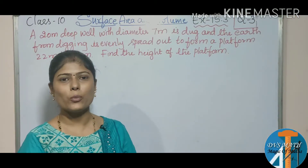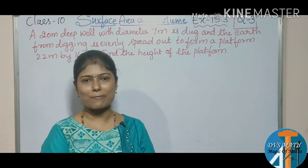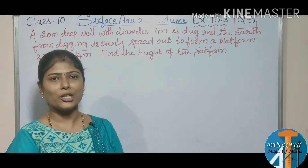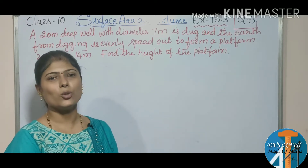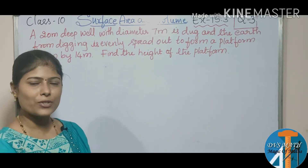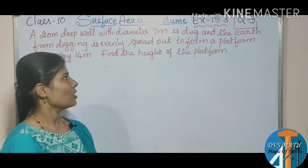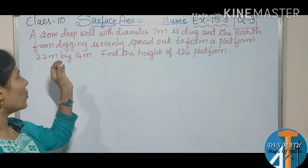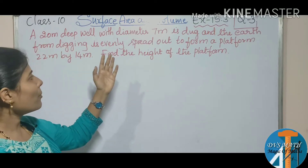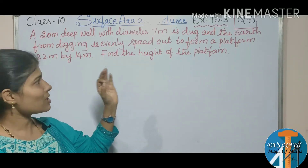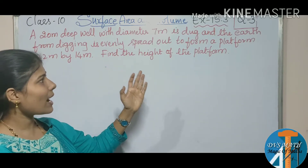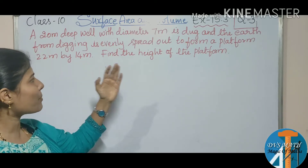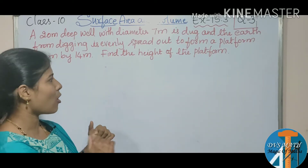Hello everyone, welcome to DBS Math Channel. I am Deepa Prasad. Today we are continuing Surface Area and Volume, Exercise 15.3, Question Number 3. A 20-meter deep well with diameter 7 meters is dug and the earth from digging is evenly spread out to form a platform.